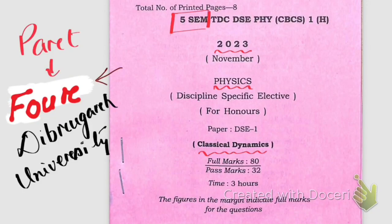Hello friends, this is part four of classical dynamics DSC paper one solution 2023, fifth semester Dibrugarh University. We have already solved up to question number 5b and we're going to start from question 5c.